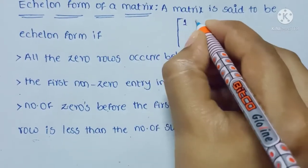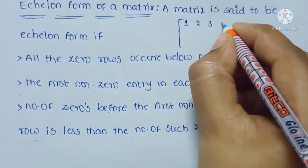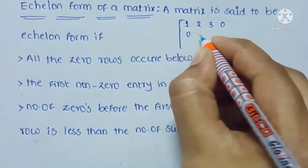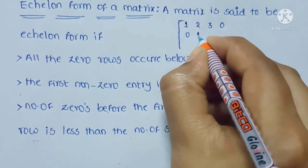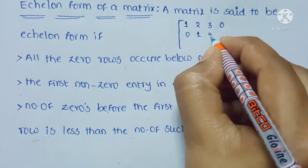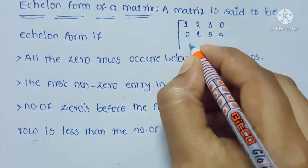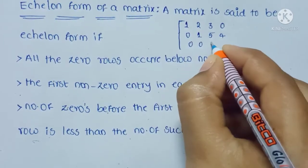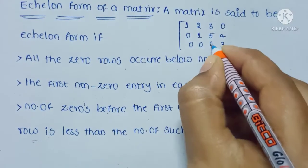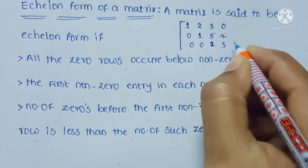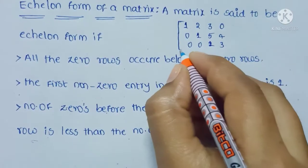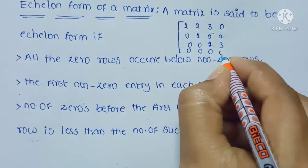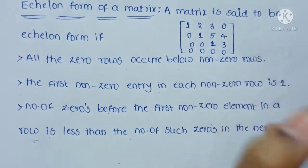The matrix is: 1, 2, 3, 0, 0, 1, 5, 4, 0, 0, 1, 3, and 0, 0, 0, 0.